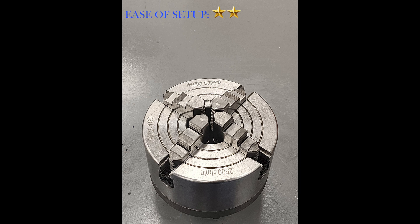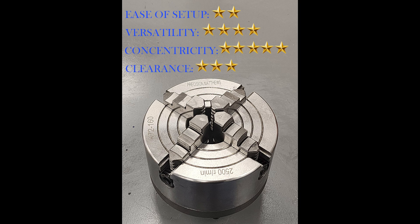So for the four jaw chuck, we take a hit on ease of setup with two stars, but I'm giving high marks for versatility at four stars, since we can hold square parts and some oddly shaped parts in addition to round stock. If you're willing to take the time to dial a part in, concentricity is five stars, and I'm putting clearance at three stars, same as the three jaw chuck.